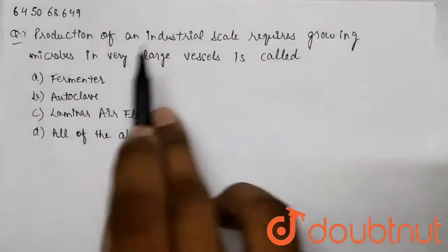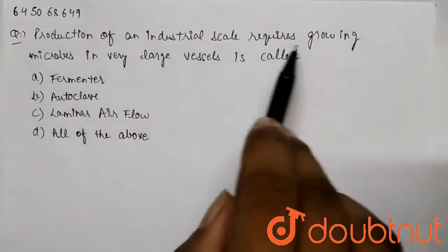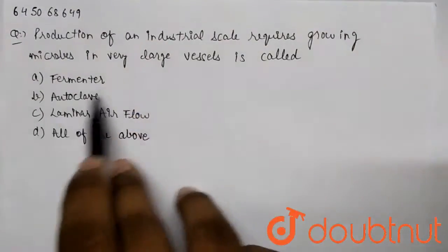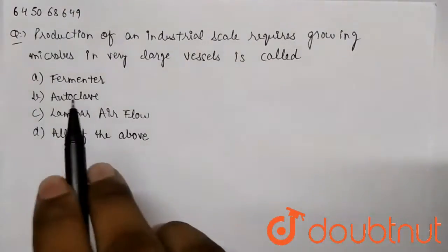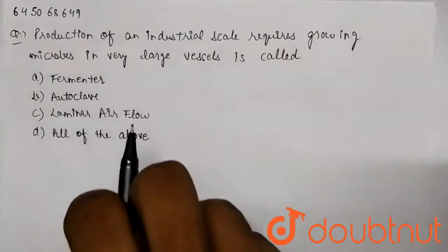So the question is: Production of an industrial scale requires growing microbes in very large vessels is called - and the options are a) fermenter, b) autoclave, c) laminar airflow, and d) all of the above.